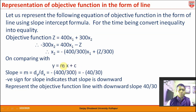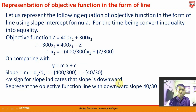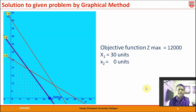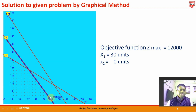Comparing with the slope-intercept formula, the slope m = dy/dx = −400/300. Remember that the minus sign is neither for x nor for y — it only indicates that the slope is downward. So we represent the Z equation with a downward slope of 40/30. The constraint equations are shown by red lines using the coordinates obtained, and the objective function line is represented by the blue line. The point of solution is where x₁ = 30, x₂ = 0, and the maximum value Z = 12,000.